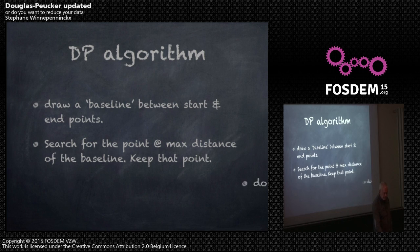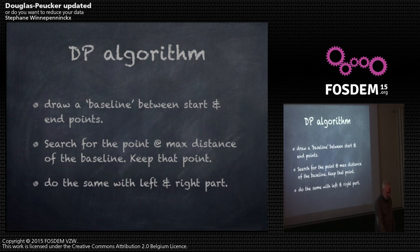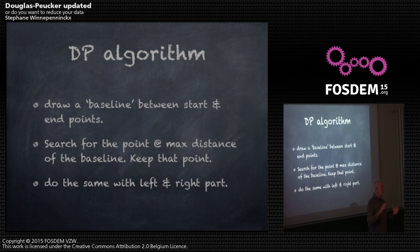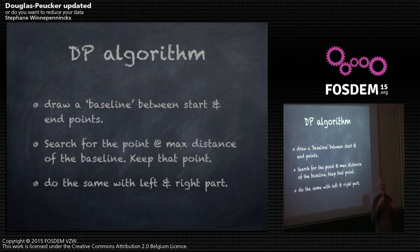When do you stop? You stop when you have reached the maximum number of points — that is one criterion — and the other criterion is to stop when the distance you measure is less than the maximum error that you want to have.